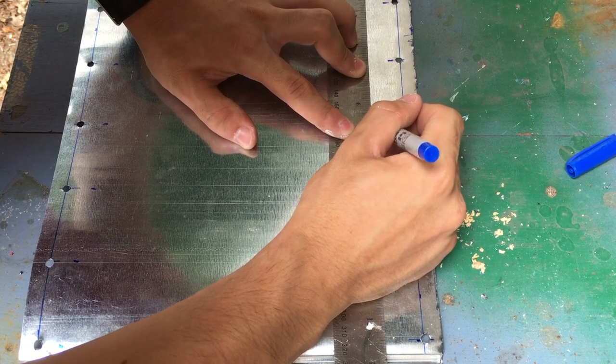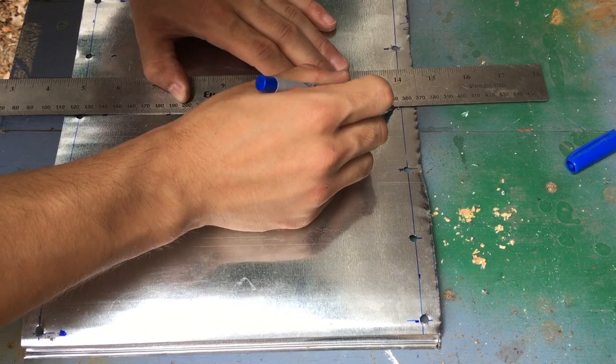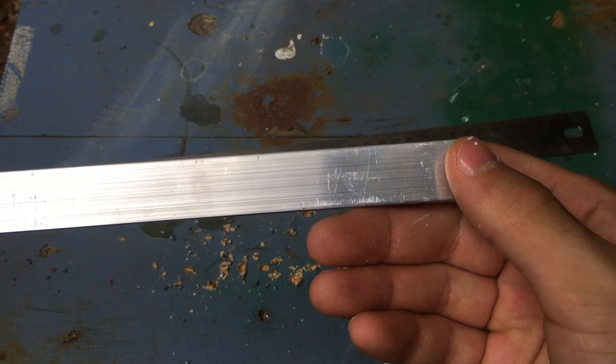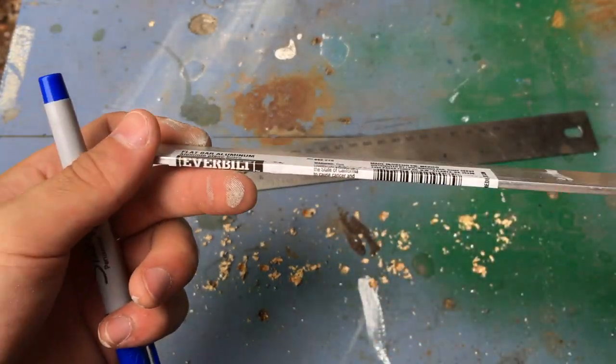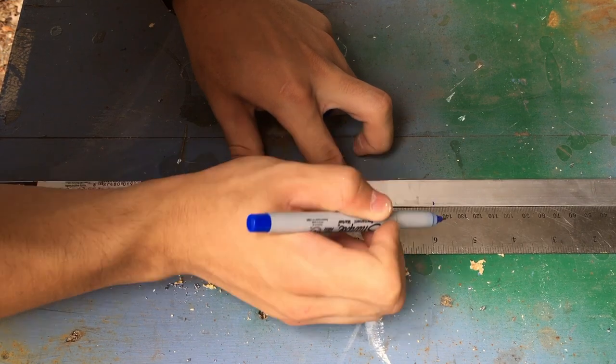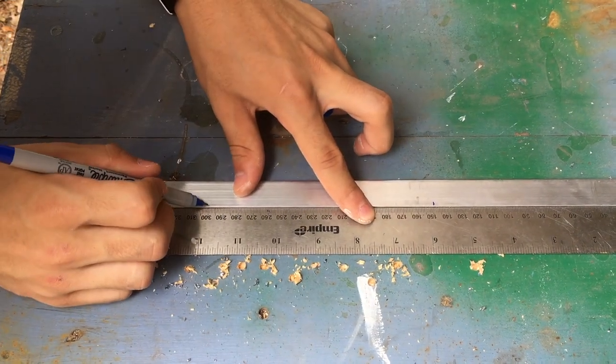I then marked out the center of the light because that's where the LEDs would go and I needed to mount the heat sink there. To make the heat sink I just used some raw aluminum stock that I bought at Home Depot and cut it into 15 centimeter segments.